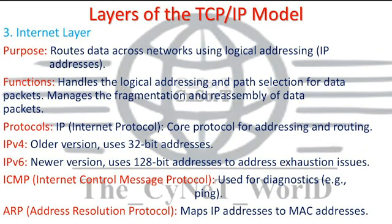Layer 3: Internet Layer. Purpose: Routes data across networks using logical addressing, i.e., IP addresses. Functions: Handles the logical addressing and path selection for data packets. Manages the fragmentation and reassembly of data packets.